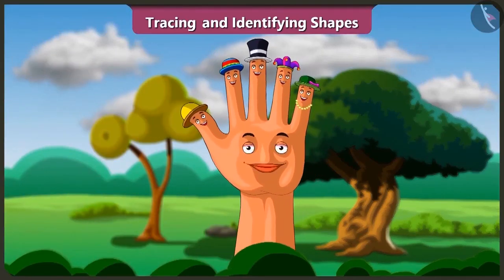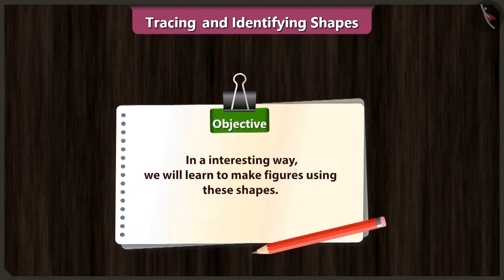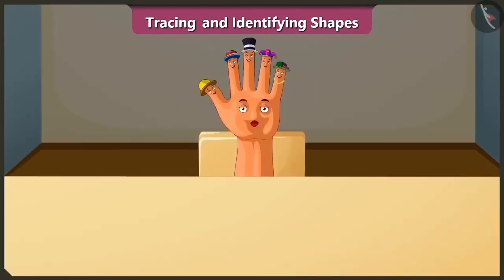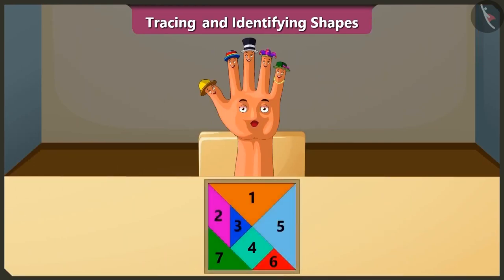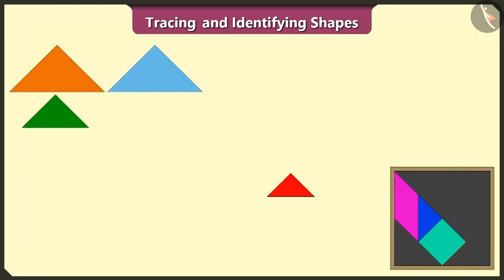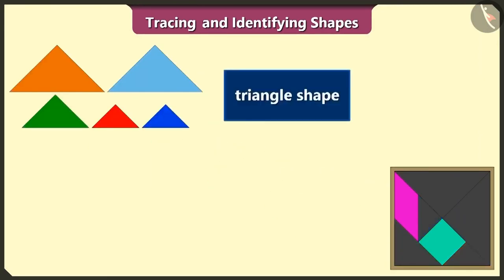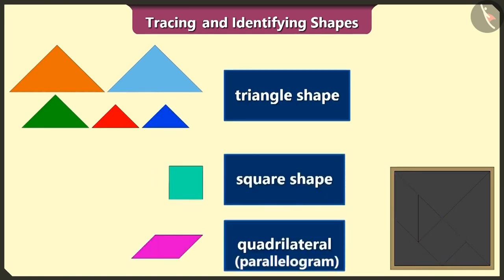Friends, we have learned to identify and trace shapes. Today, in an interesting way, we will learn to make figures using these shapes. Look friends, this is a tangram. There are a total of 7 shapes in it. This tangram is made of 1, 2, 3, 4 and 5 triangle shapes, 1 square shape and 1 quadrilateral.